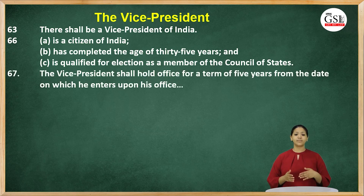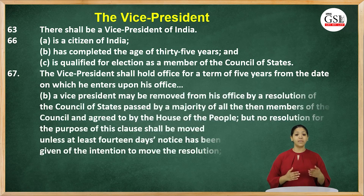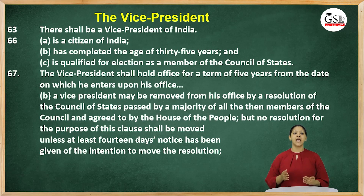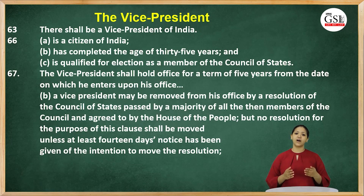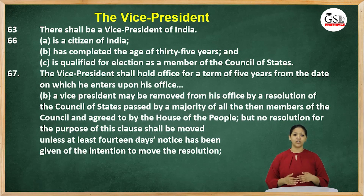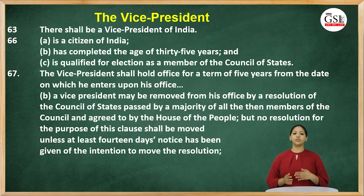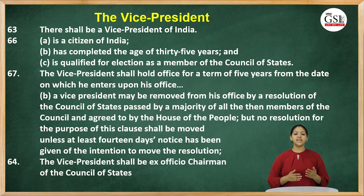The vice president shall address his resignation to the president. The vice president may be removed from office by the passing of a resolution passed by a majority of the Council of States and then passed by the majority of members of the House of People. The resolution must first be passed in the Council of States; a resolution for the removal of the vice president cannot be moved in the House of People first.